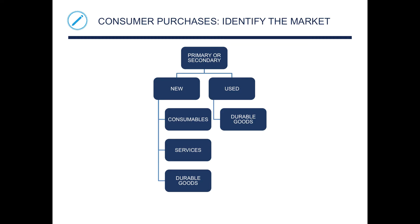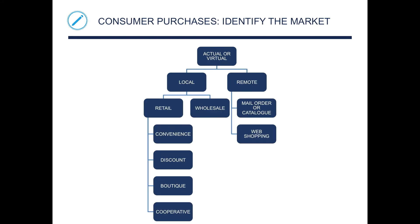On the primary or secondary dimension, you have new and used. You have consumable services and durable goods on the new side, and durable goods on the used side — we don't resell food that's already been eaten. For actual or virtual, it splits into local or remote. On the local side you have retail and wholesale.